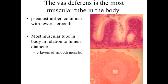This is going to go into the vas deferens. The vas deferens is going to be lined by still that pseudostratified columnar epithelium, with fewer stereocilia, so it's going to have a little bit of an irregular appearance but not as prevalent as what we saw within the ductus epididymis. The most identifying characteristic of the vas deferens is that we're going to have an incredibly muscular wall structure associated with it. The vas deferens is going to be the most muscular tube in the body in relationship to the lumen diameter — a relatively small lumen but a very, very thick muscularis, with three layers of muscle cells.